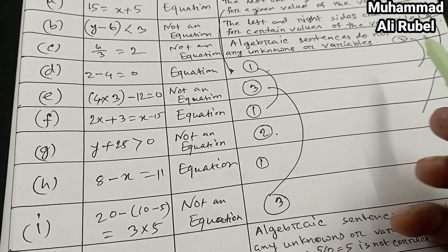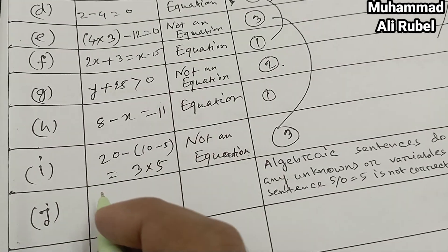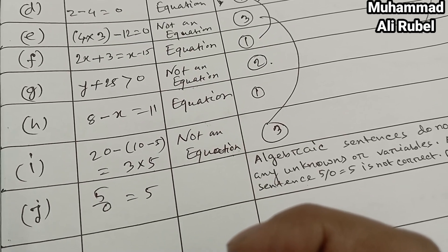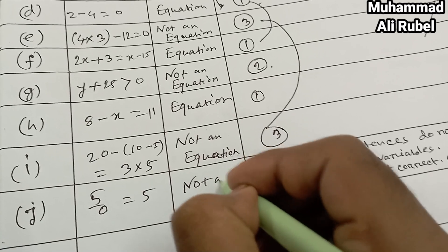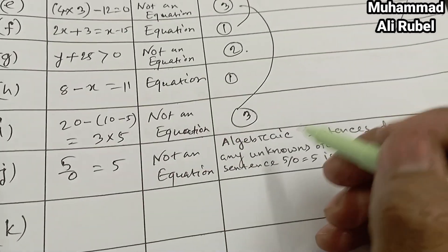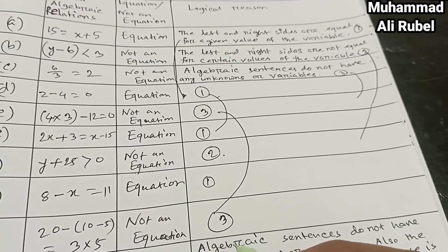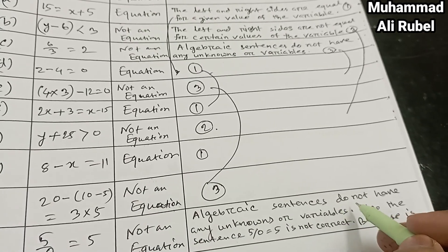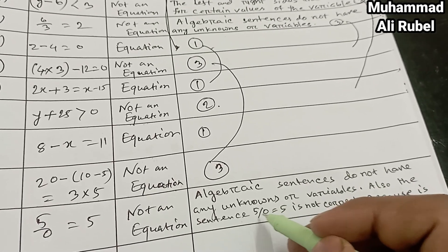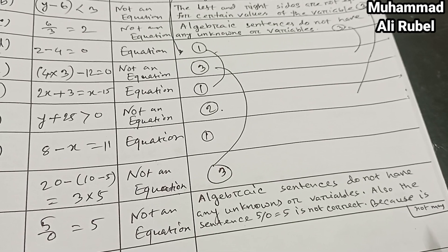Reason number three: algebraic sentences do not have any unknowns or variables. Item j: 5 over 0 equal 5 — it is also not an equation. We write the logical reason: algebraic sentences do not have any unknowns or variables. Also, the sentence 5 over 0 equal 5 is not correct because it is not valid mathematically.